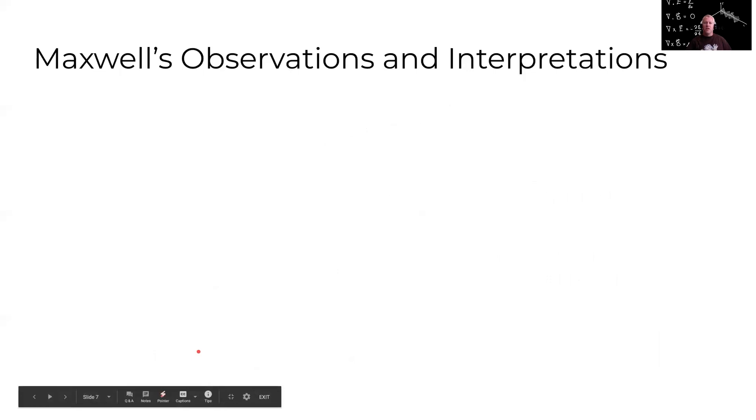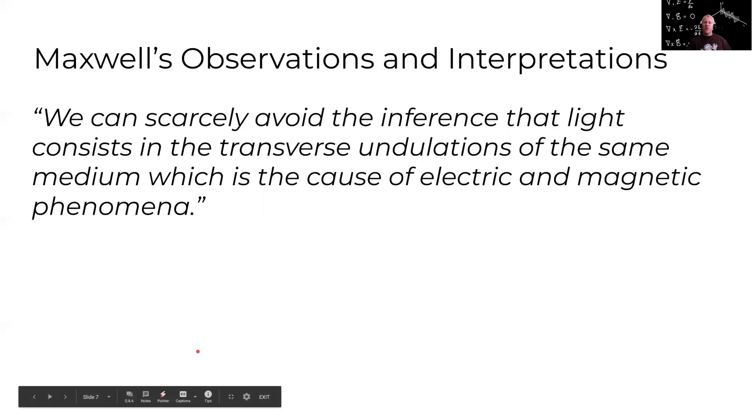Now I have a couple of beautiful quotes here from Maxwell's written correspondence with his friends and family and colleagues which actually describe his observations and his interpretation of what they knew at the time. So we can scarcely avoid the inference that light consists in the transverse undulations of the same medium which is the cause of electric and magnetic phenomena. So this beautiful language here we've got the idea of undulations so we're talking about transverse vibrations transverse waves and that light is made of these transverse undulations of electric and magnetic fields.